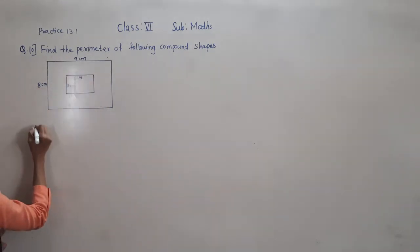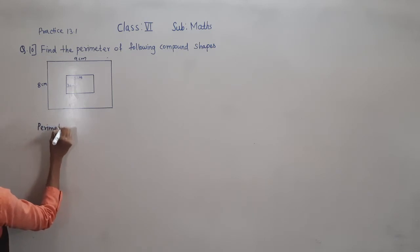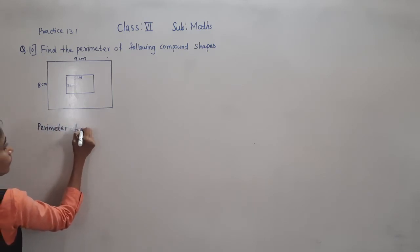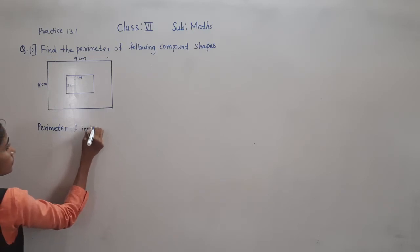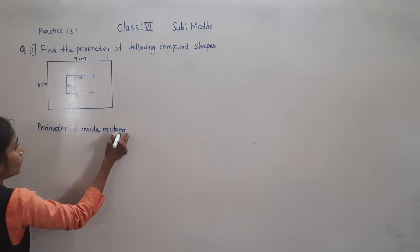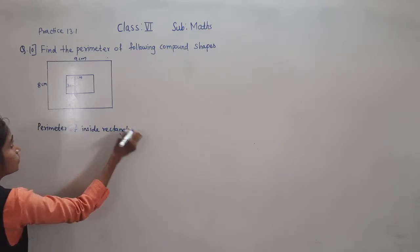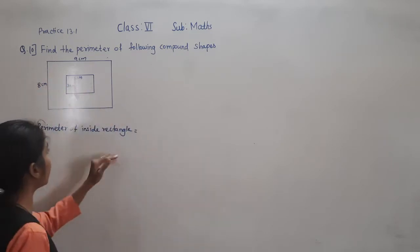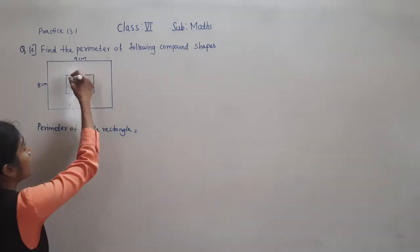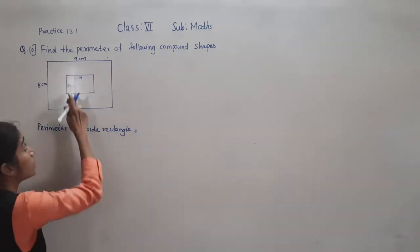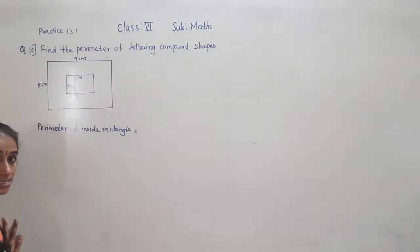This is a rectangle. So perimeter of — we can call this rectangle 1 and this rectangle 2. So perimeter of the inside rectangle: what is the length of the inside rectangle? 5 cm. And what is the breadth of the inside rectangle? 3 cm.